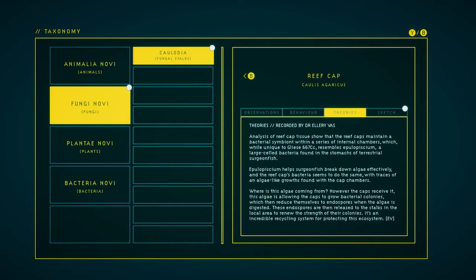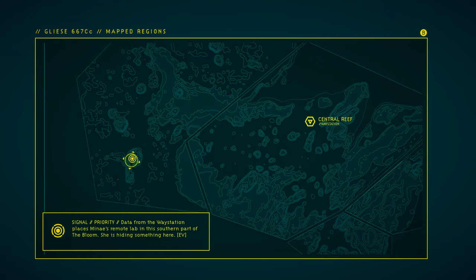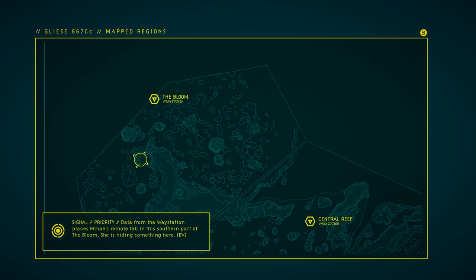Analysis of reef cap tissue shows that the reef caps maintain a bacterial symbiont within a series of internal chambers, which, while unique to Gliese 667 CC, resembles epilopiescium, something like that, a large-celled bacteria found in the stomachs of terrestrial surgeonfish. Epilopiescium helps surgeonfish break down algae effectively, and the reef cap's bacteria seem to do the same, with traces of an algae-like growth found with the cap chambers. Where is this algae coming from? However the caps receive it, this algae is allowing the caps to grow bacterial colonies, which then reduce themselves to endospores when the algae is digested. These endospores are then released to the stalks in the local area to renew the strength of their colonies. It's an incredible recycling system for protecting this ecosystem. So our next goal is to go down here, which is where the remote lab should be. So let's continue going through the bloom.